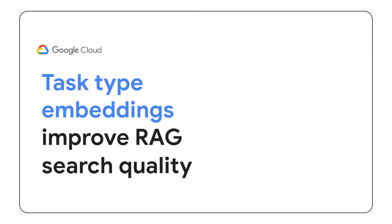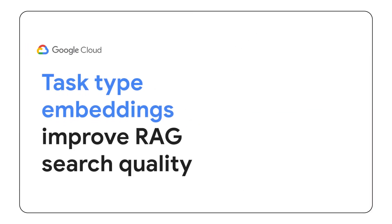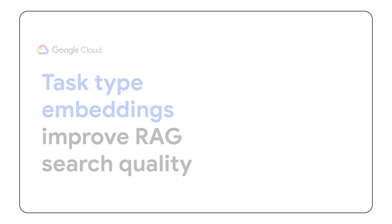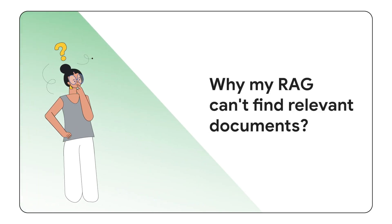This video explores the possible reasons for low search quality in Retrieval Augmented Generation and demonstrates how new task type embeddings can address this issue. Retrieval Augmented Generation is rapidly gaining popularity as an architecture pattern for grounding large language models. It retrieves relevant business data and feeds it to the LLM, effectively reducing hallucinations.